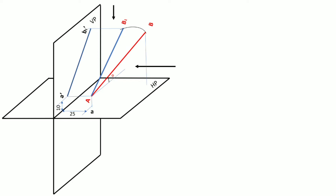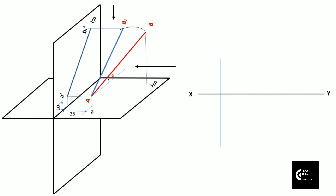To project this line with respect to the XY line, we will draw the XY line first, then locate points A' and A. In the front view, the line will become A'B1', making angle theta only, because we have not altered the angle theta or the inclination with the horizontal plane. So at the same angle theta we draw line A'B1'. This line is the true length, and the angle is also theta, which the line makes with the horizontal plane.